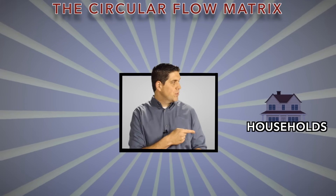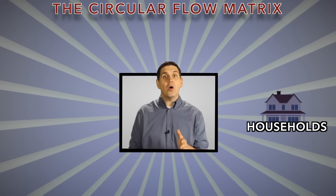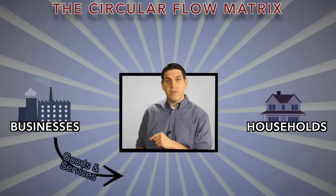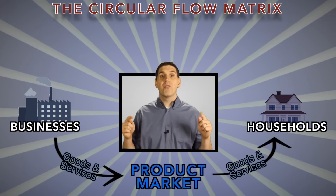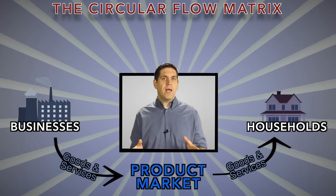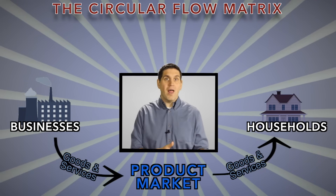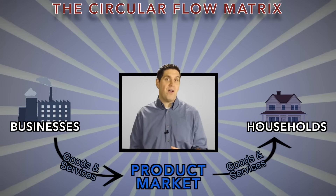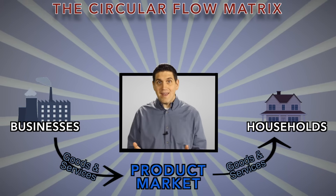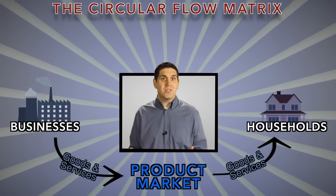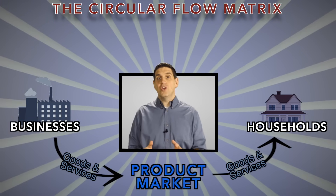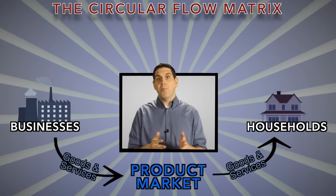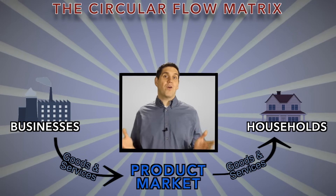In a market economy, there's households, which is just people like you and me, and there's also businesses. Businesses sell goods and services to the households in something called the product market. It's not like just one place — it's anywhere things are sold, like online or the mall or the street corner, anywhere you can buy stuff. The computer or phone in front of you right now is a great example. You didn't produce that — a business did, and they sold it to you in the product market. The same thing applies to your chair or pencil or the book over there — everything around you.